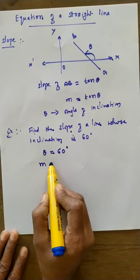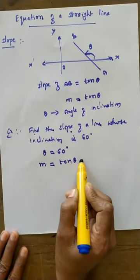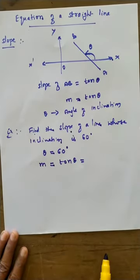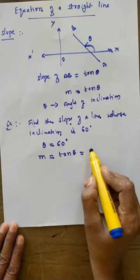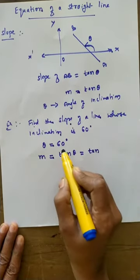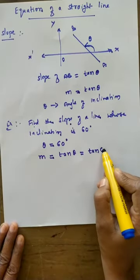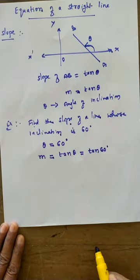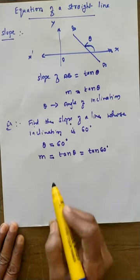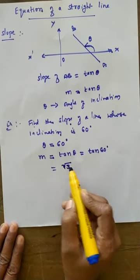The formula is M = tan θ. Since θ is given as 60 degrees, we compute tan 60°, which equals square root of 3.